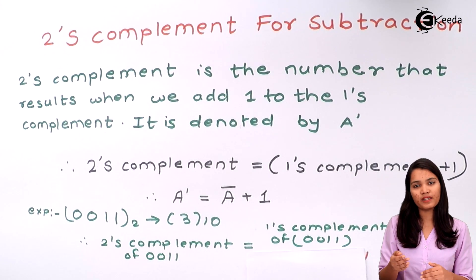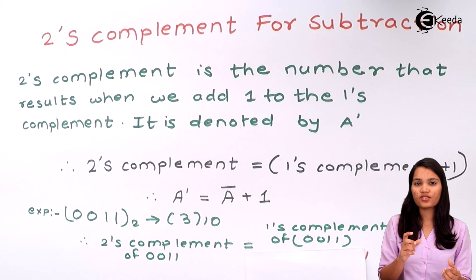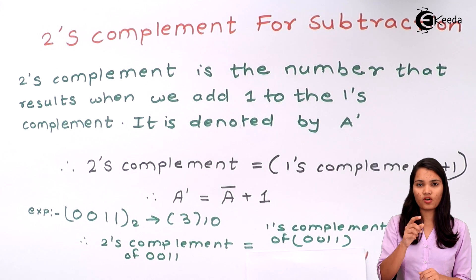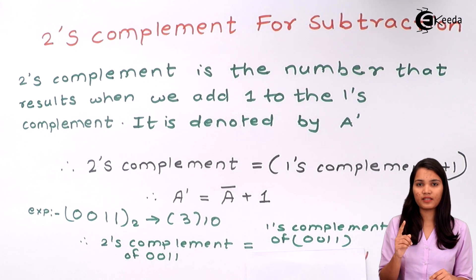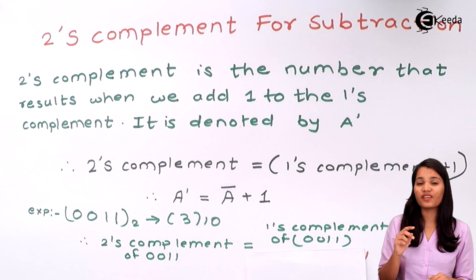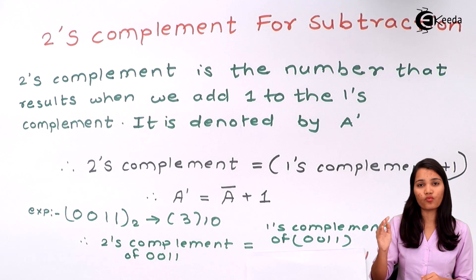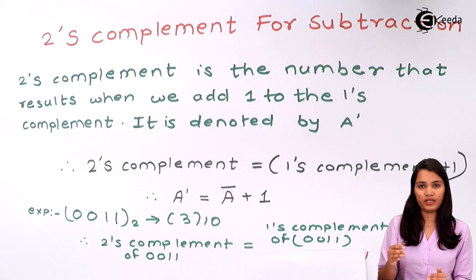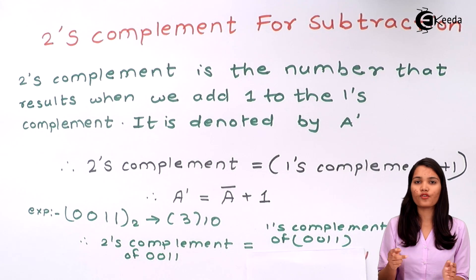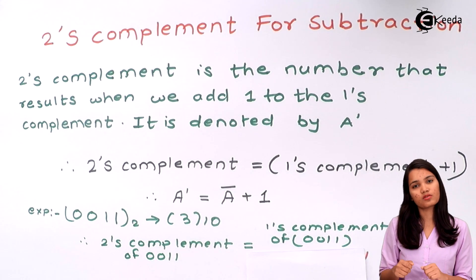In the 2's complement method, first of all you find out the 1's complement of that particular number, and then you add binary 1 — that is 0001 — to the 1's complement, so that you get the 2's complement.